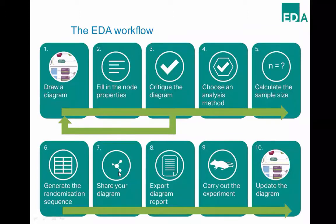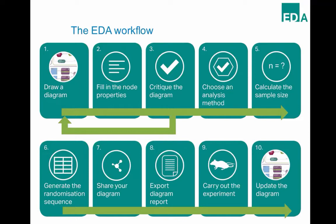Soon you'll be able to export a diagram report — functionality currently in development — which will contain key information about your experiment and an image of your diagram. This happens to be exactly what major funders in the UK want to see in grant applications, helping you provide this information in a standardised format. After you get funded and carry out the experiments, you can go back and update the diagram — for example, updating the number of animals actually analysed if there was unexpected attrition, keeping an accurate description of your experiment.